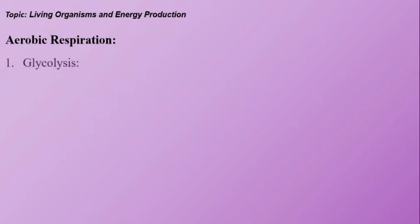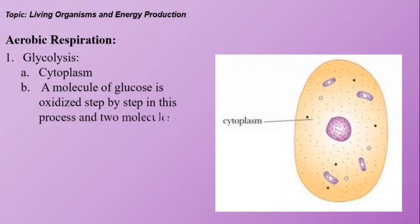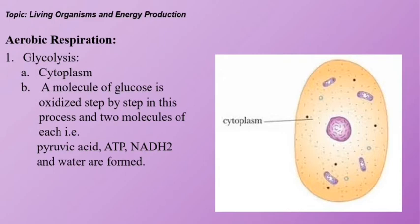Process of glycolysis occurs in cytoplasm. A molecule of glucose is oxidized step by step in this process and two molecules of each are formed: Pyruvic acid, ATP, NADH2 and water. Note: remember three words: Pyruvic acid, ATP and NADH2 which is released during the process.